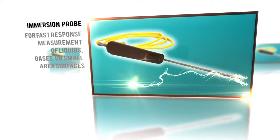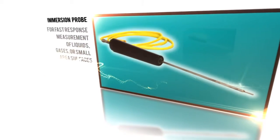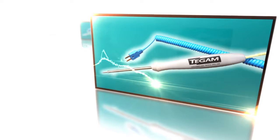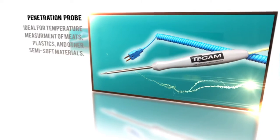When measuring the internal temperature of solid materials, such as meat or vegetable products, the pointed tip of a penetration probe is ideal.